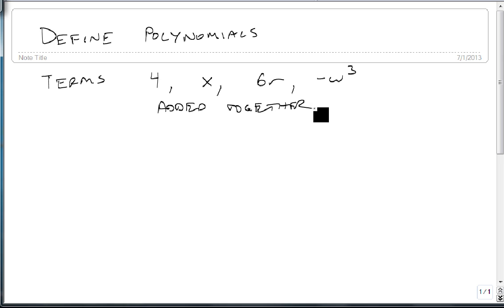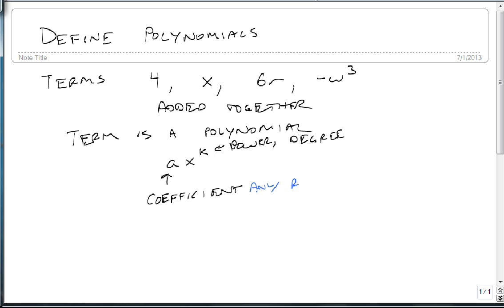As we're looking at terms, a term is a polynomial if it can be written as ax to the k. We call a the coefficient, and we call k the power or degree. The coefficient is allowed to be any real number.